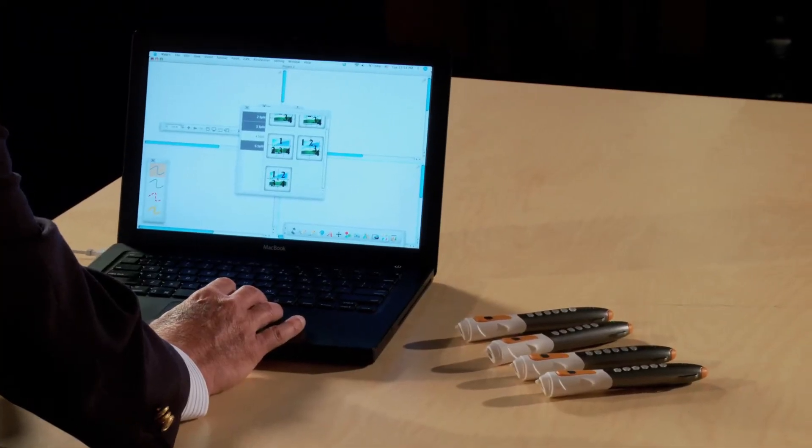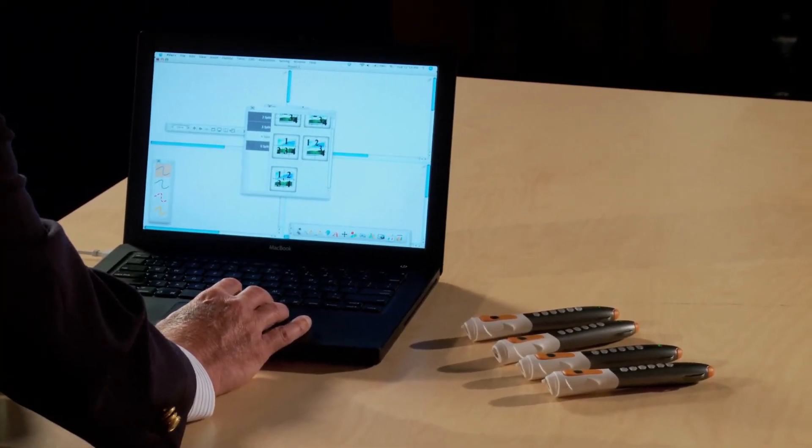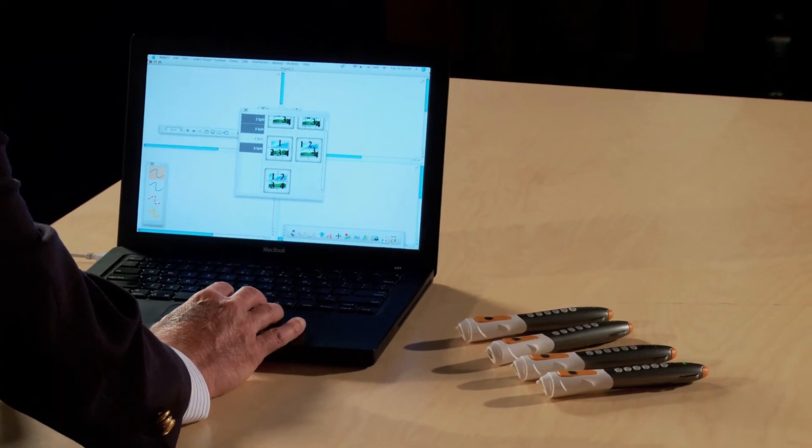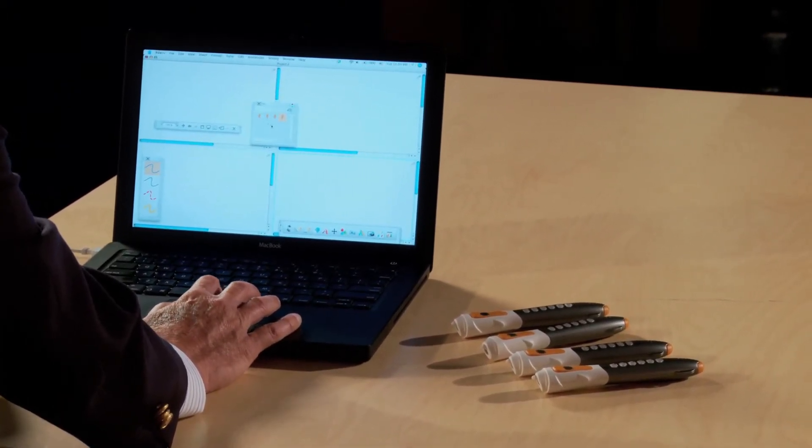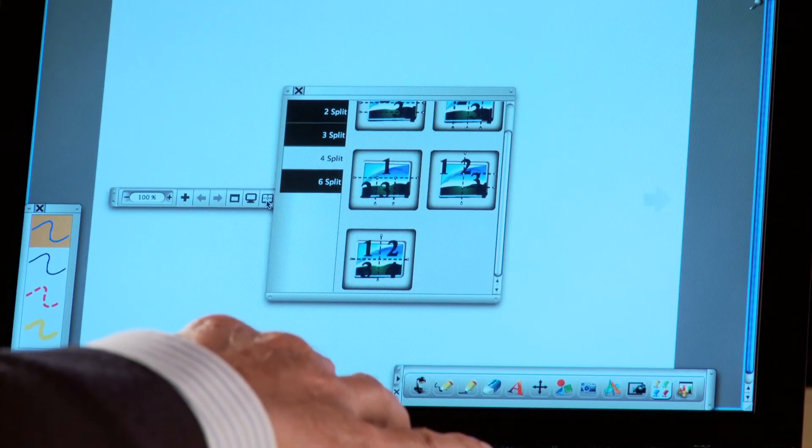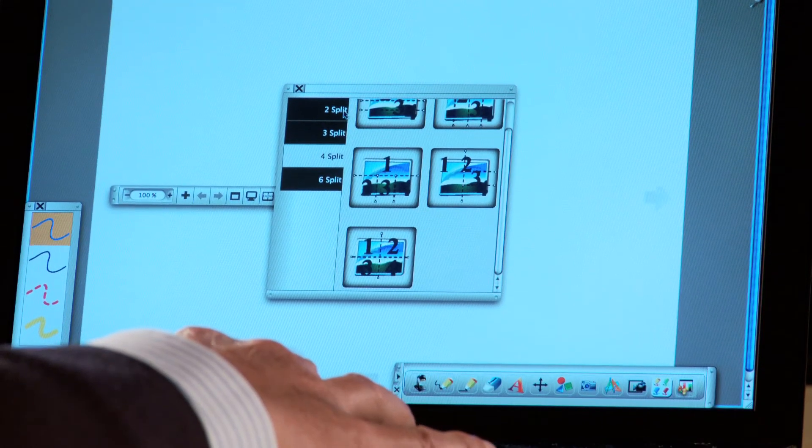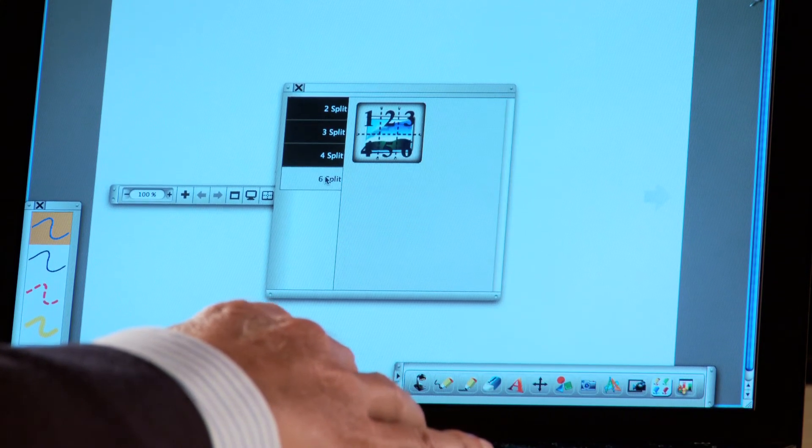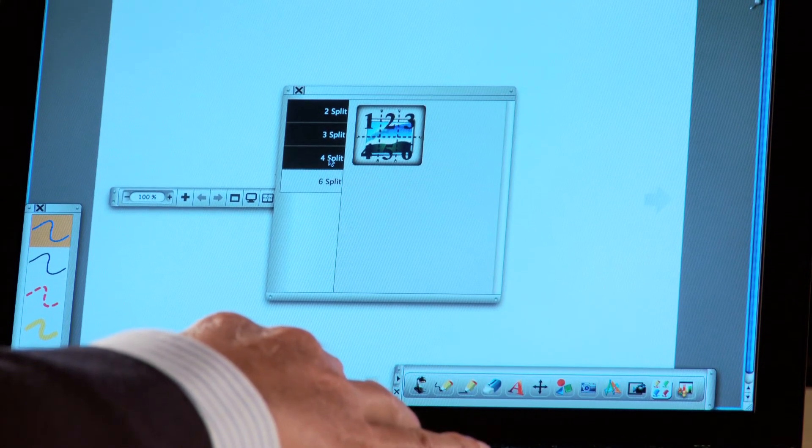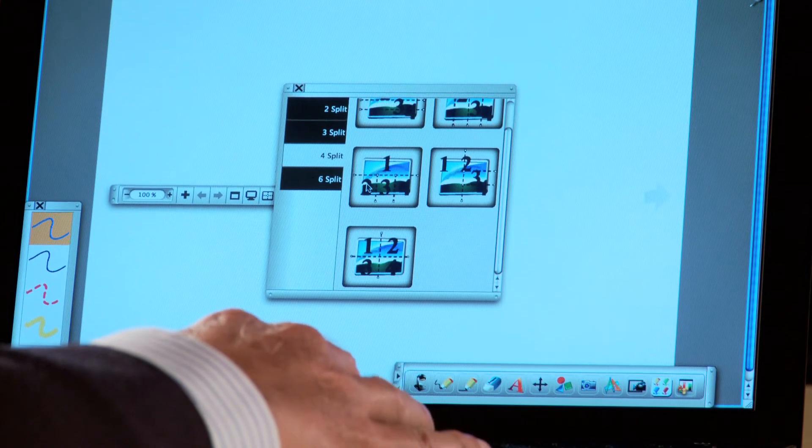The software is the key. It has similar functions to most software for document cameras and whiteboards. What's unique about Aver Plus is you can split the screens into two, three, four, or six sections. I'm going to choose four sections in this configuration.